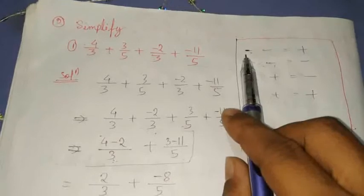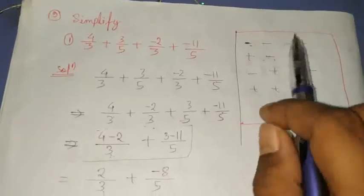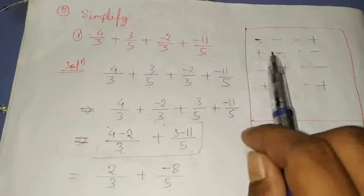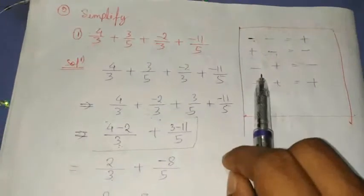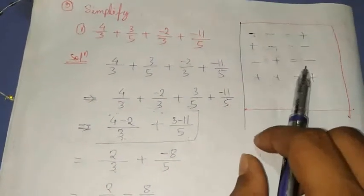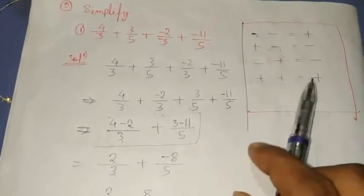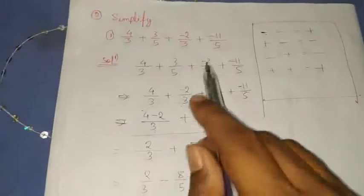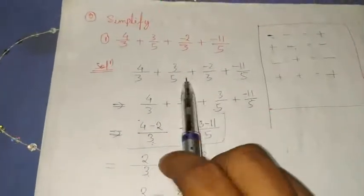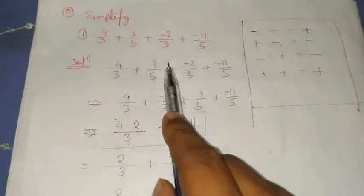If you multiply a negative sign with a negative sign, you will get a positive sign. If you multiply a positive sign with a negative sign, you will get a negative sign. If you multiply a negative sign with a positive sign, you will get a negative sign. If you multiply a positive sign with a positive sign, you will get a positive sign. These are the basic mathematical operations.